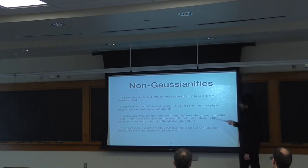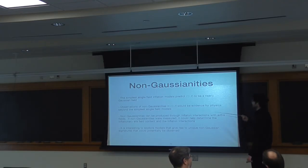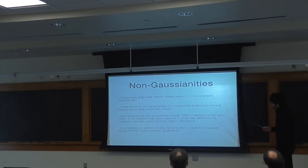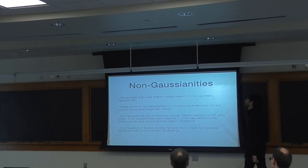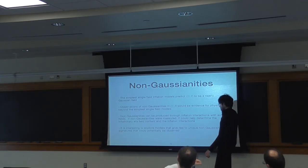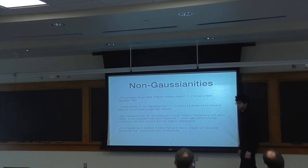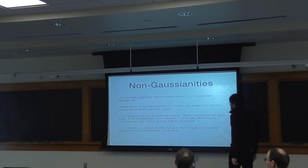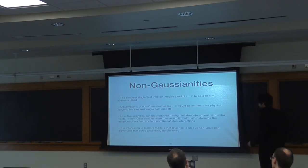Now I'm going to talk about non-Gaussianities, which we haven't seen yet, but we'll talk about how they could be seen in large-scale structure or possibly the CMB. The simplest single-field inflation models predict zeta to be a nearly Gaussian field — there are small non-Gaussianities, but they're generally pretty small. If we were to observe non-Gaussianities in zeta, that would be evidence for physics beyond these simple single-field models. One way to generalize non-Gaussianities is through interactions between the inflaton and extra fields that might have been present during inflation. If we were to measure these non-Gaussianities, it might help us determine the correct theory of inflation and what fields were present.